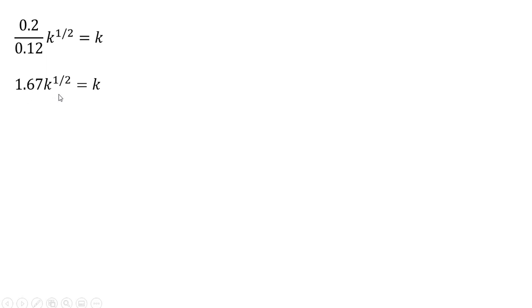Simplifying and dividing through by 0.12, we get 1.67k^(1/2) = k. Dividing through by k^(1/2) and then squaring both sides, 1.67 = k^(1/2).